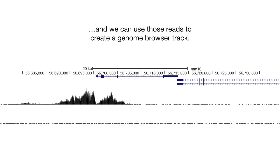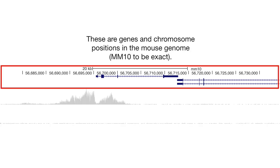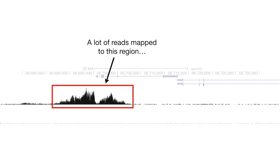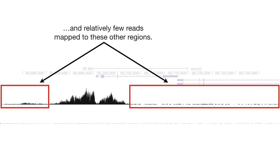And we can use those reads to create a genome browser track. These are genes and chromosome positions in the mouse genome, mm10 to be exact. This is the track that we created for our ChIP-seq reads. A lot of reads map to this region, and relatively few reads map to these other regions.